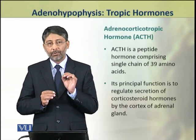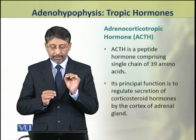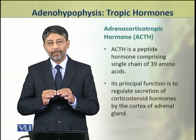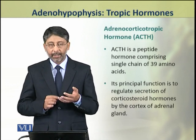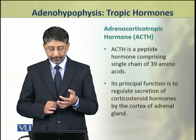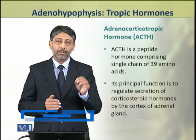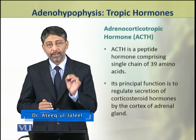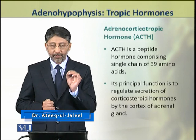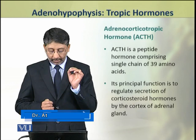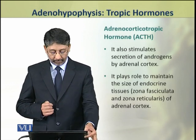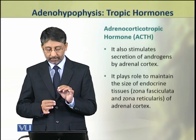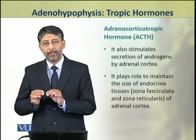The adrenocorticotropic hormone, or ACTH, is a peptide hormone that comprises a single chain of 39 amino acids. Its principal function is to regulate the secretion of corticosteroid hormones by the cortex of the adrenal gland. It also stimulates the secretion of androgens by the adrenal cortex.